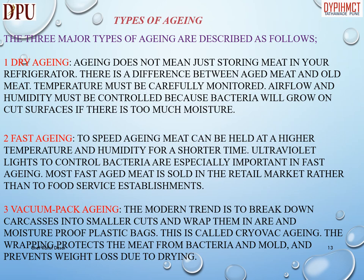Fast aging: to speed aging, meat can be held at a higher temperature and humidity for a shorter time. Ultraviolet lights to control bacteria are especially important in fast aging. Most fast-aged meat is sold in the retail market rather than to food service establishments.